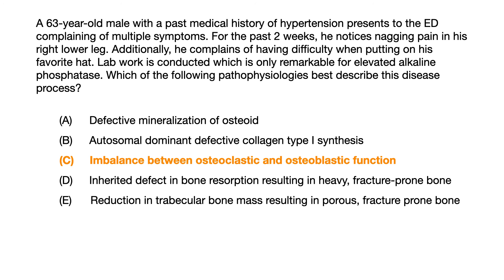If you knew the buzzword of difficulty putting on a hat, the answer was clear. But even if you didn't, you could have worked backwards through choices A, B, D, and E and ruled them out based on age or missing clinical symptoms. Train your brain to recognize these patterns and ask yourself: if they wanted me to pick A, what would they have given me in the question? Thinking like that is how you score high on USMLE or COMLEX.